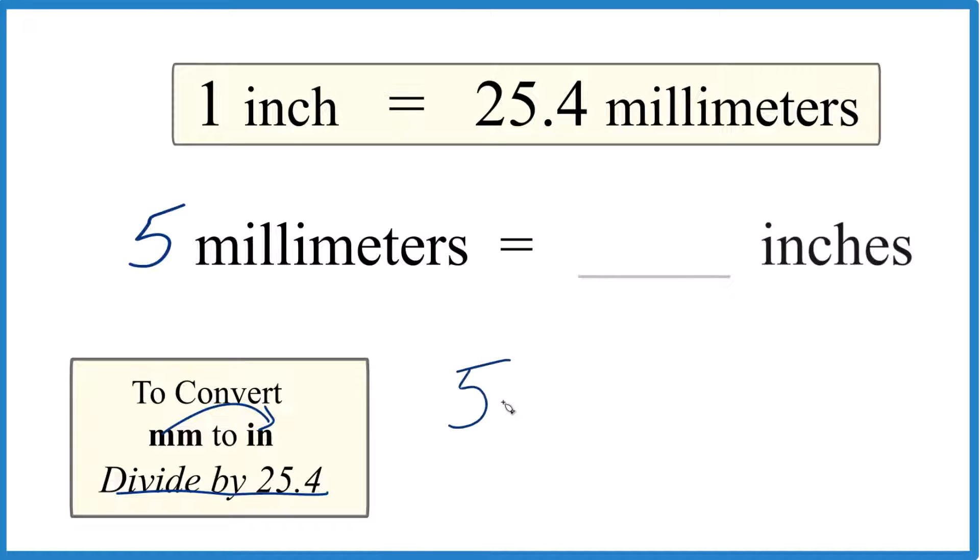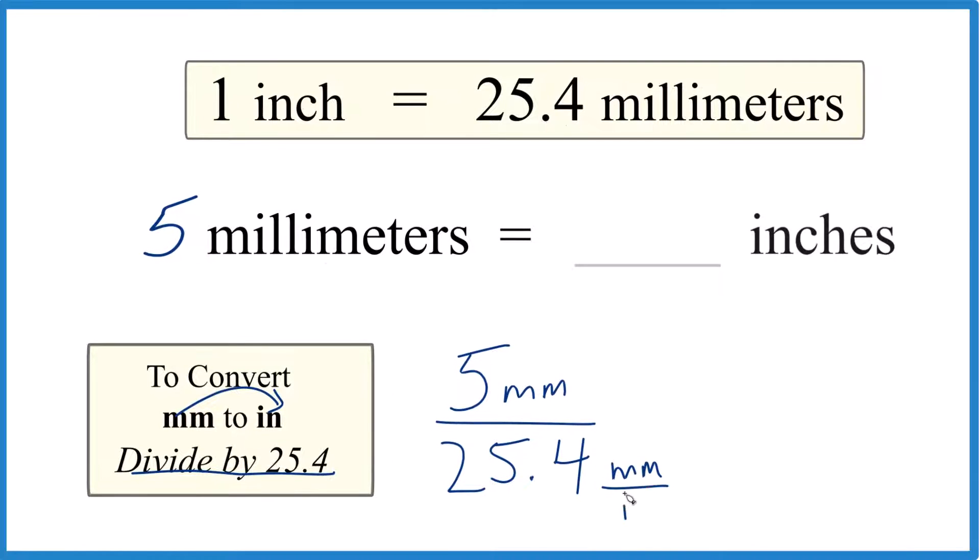So five millimeters, we're going to divide by 25.4. And that 25.4, that's millimeters per inch here.